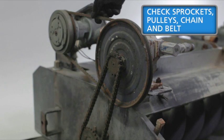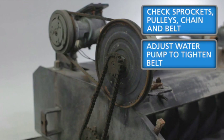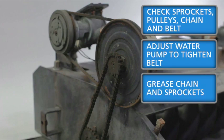Check the sprocket and pulley alignment, as well as the tension of the chain and belt. Look for undue wear on the various components and check for any movement. Follow this by adjusting the water pump to tighten the drive belt. Grease the chain and sprockets before reinstalling the guard. Do not start the machine until this and all other guards are replaced.